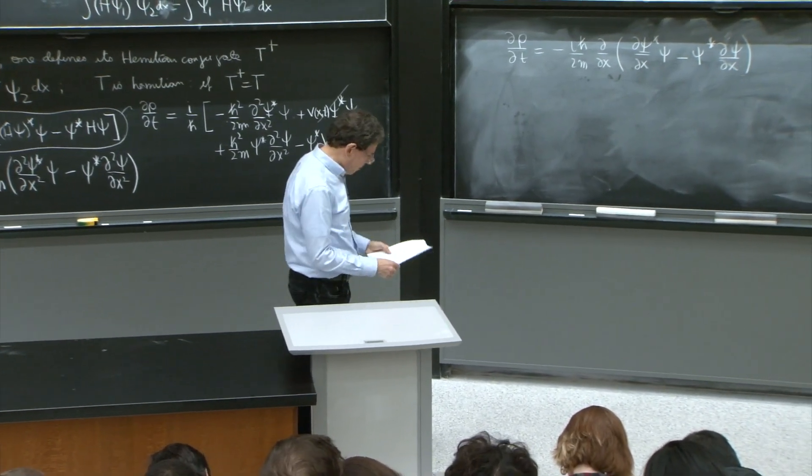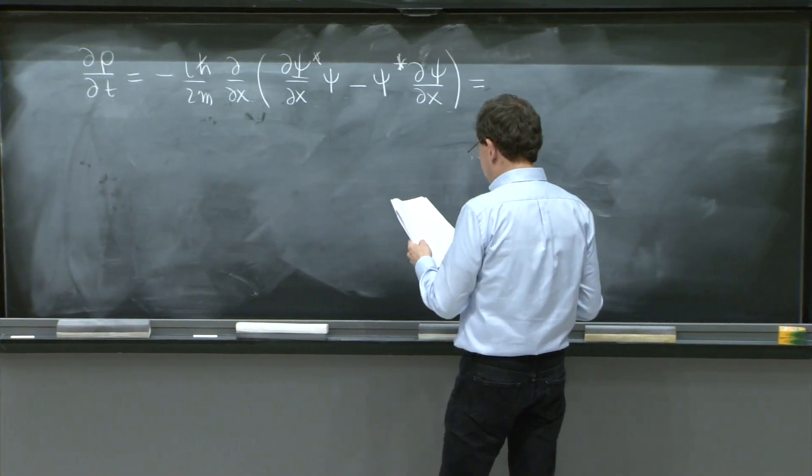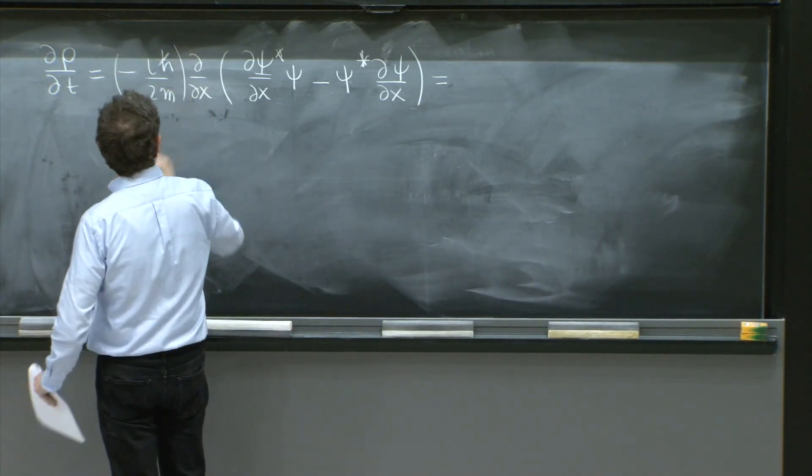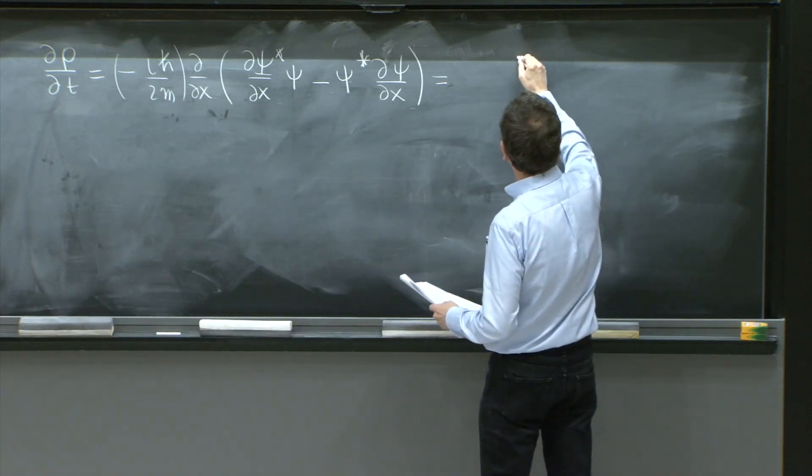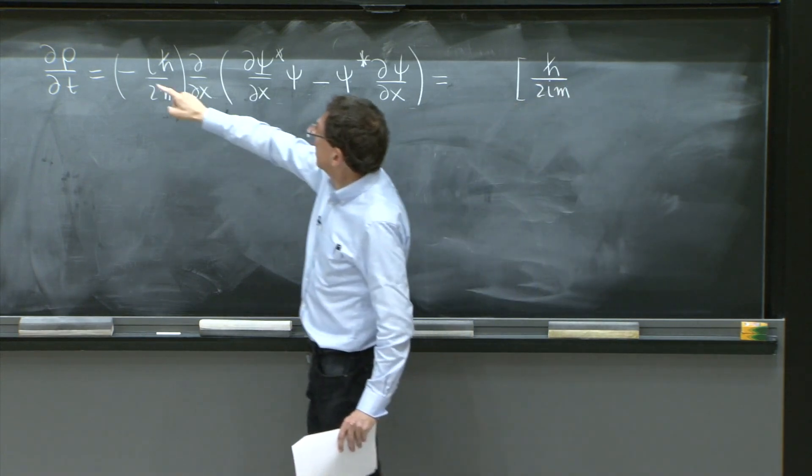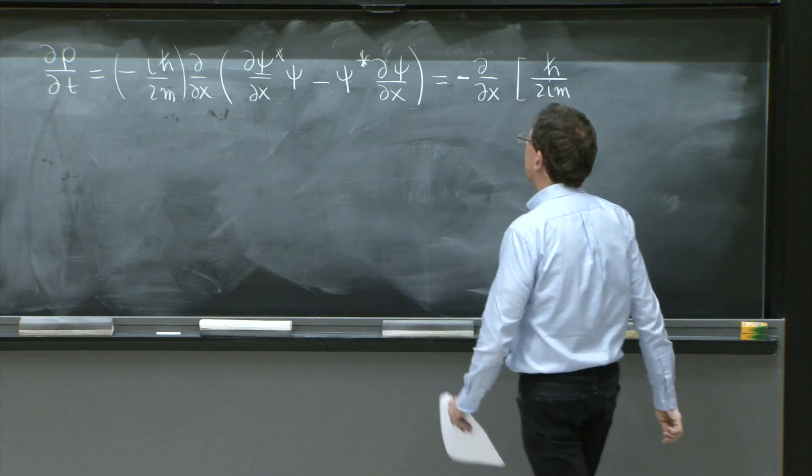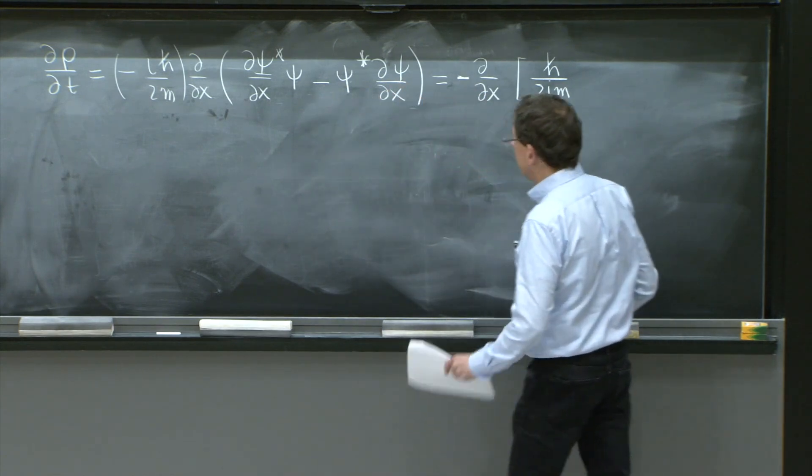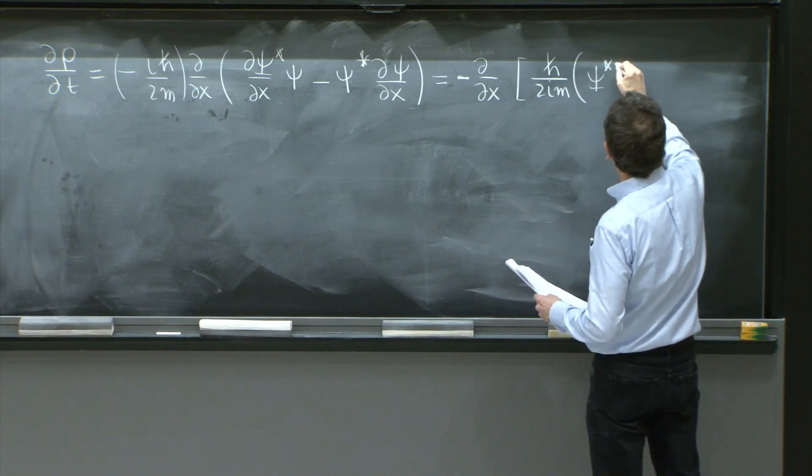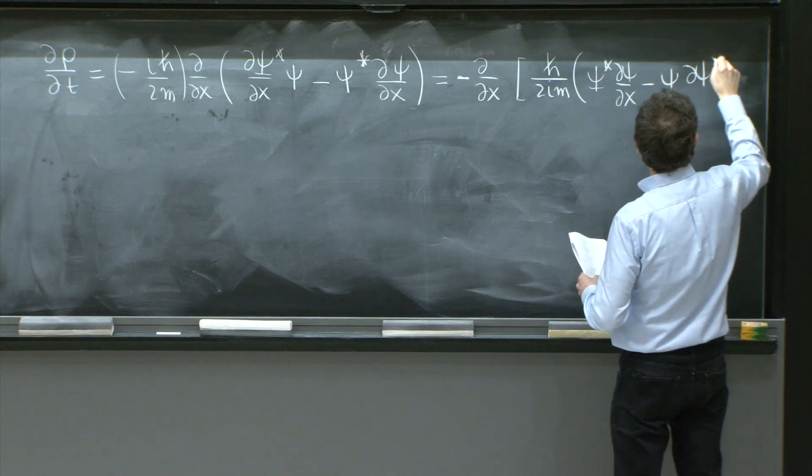So we're going to rewrite it a little more. I'll write it as the following way. This whole factor is h bar over 2im. That's with its sign. I'll put the d/dx outside. I'll put an extra minus sign. So I will flip the order of these two terms, psi star d psi/dx minus psi d psi star/dx.